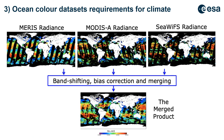This image illustrates merging data from three satellites: a daily image from MERIS on the top left, MODIS Aqua in the middle, and SeaWiFS on the right. The data are band-shifted, bias-corrected, and merged together. The merged product at the bottom has much better spatial coverage than each of the individual satellite products shown at the top.